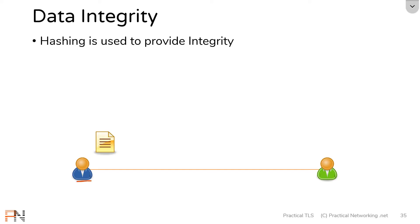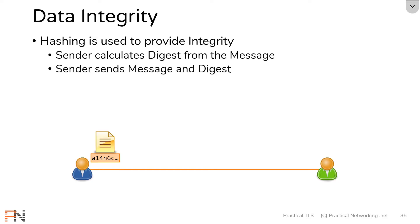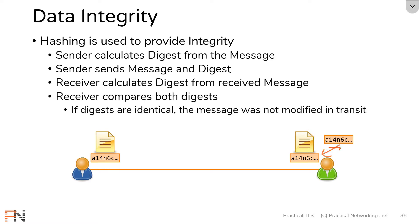The way it works is when the sender has a message to send, it's going to calculate a digest from that message. It's going to put this message through a hashing algorithm, something like MD5 or SHA-1 or such. Then it's going to send both the message and the digest to the other side. The receiver is then going to independently calculate a digest from what was received. And if these two digests are the same, this tells us that the message was not modified in transit.